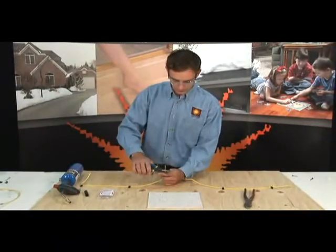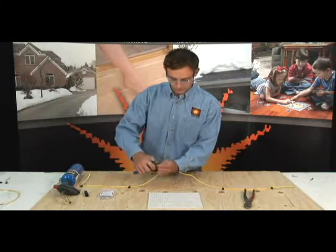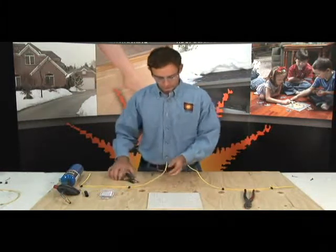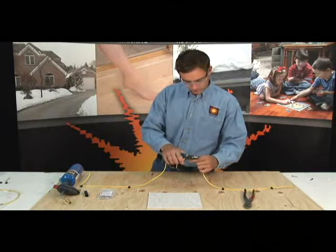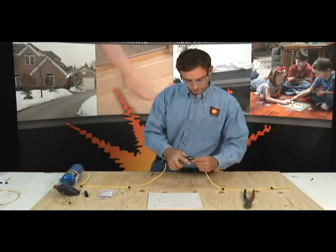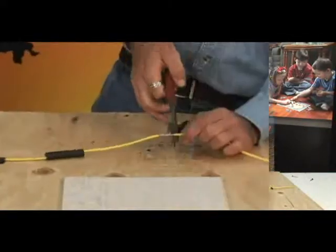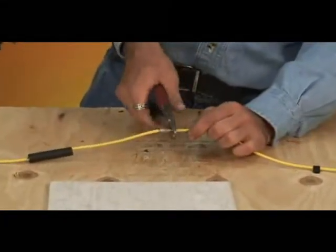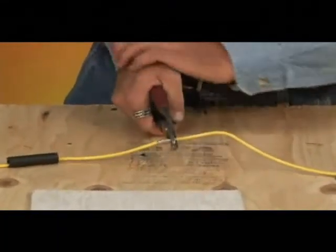Tough cable splicing is accomplished by sliding the provided heat shrink at least 8 inches beyond the splice, then stripping back the insulation on the wires to be spliced 1 inch. Next, insert the tough cable into the number 10 butt splice connector.